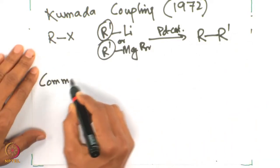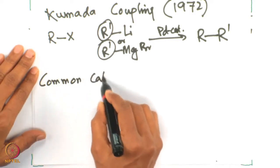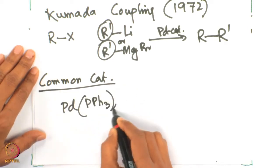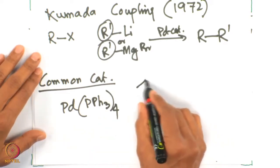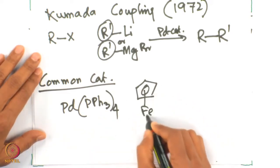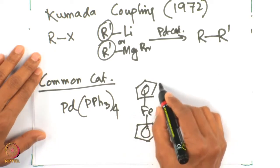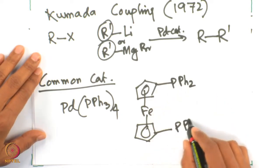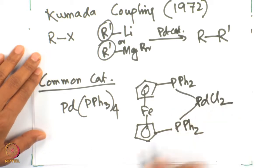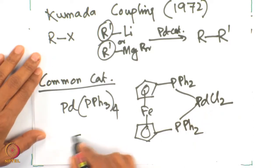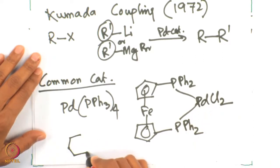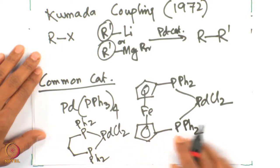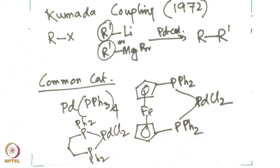The common catalysts used include palladium tetrakis(triphenylphosphine), usually referred to as palladium tetrakis, or DPPF as the ligand for palladium — DPPF is a PPh₂ reagent — with palladium chloride. Also DPP can be used as the ligand for palladium chloride in different variants for these processes.